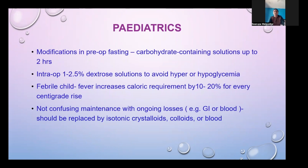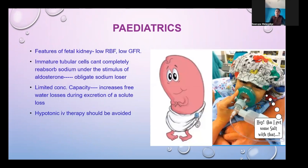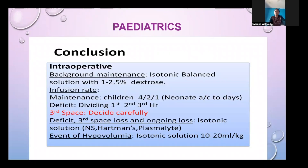Maintenance fluid and ongoing losses should each be replaced individually using isotonic crystalloids, colloids, or blood. Regarding fetal kidney physiology: the fetal kidney has low renal blood flow, low GFR, and immature tubular cells that cannot completely reabsorb sodium under aldosterone stimulus — making the fetal kidney an obligate sodium loser. There is also limited concentrating capacity, increasing free water losses. Therefore, hypotonic IV therapy must be avoided as it increases the risk of hyponatremia and acute hyponatremic encephalopathy, which can be fatal.